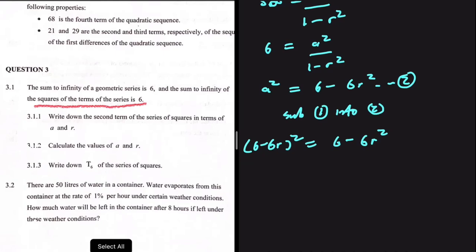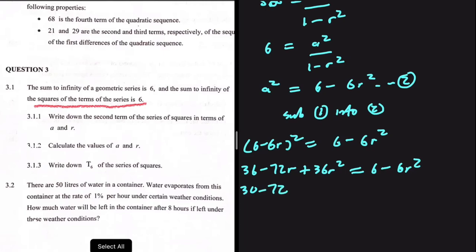Expanding (6 minus 6R) squared: 6 times 6 is 36, 6 times minus 6R gives minus 36R, doubled gives minus 72R, and minus 6R times minus 6R gives plus 36R squared. So we have 36 minus 72R plus 36R squared equals 6 minus 6R squared. Taking 6 to the left-hand side and collecting terms gives 42R squared minus 72R plus 30 equals 0.